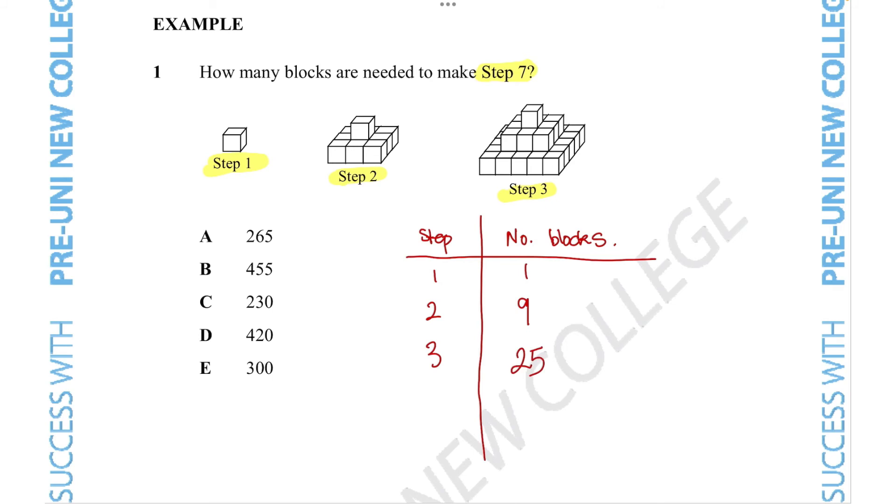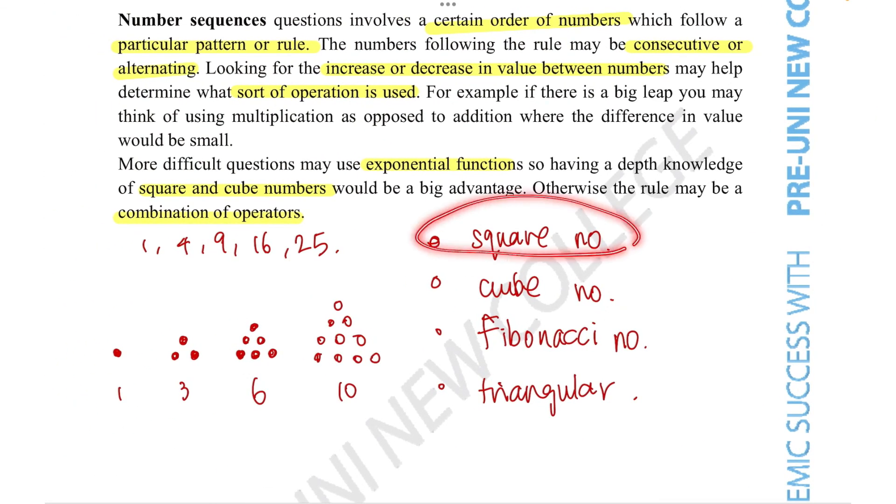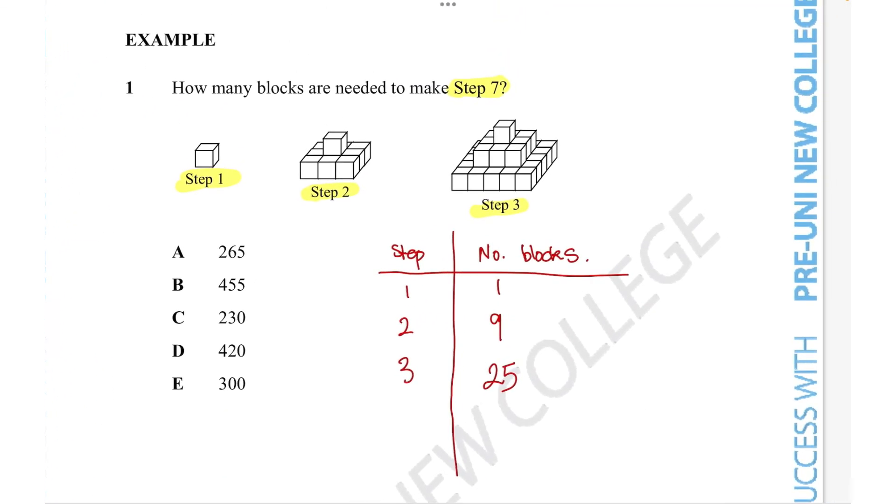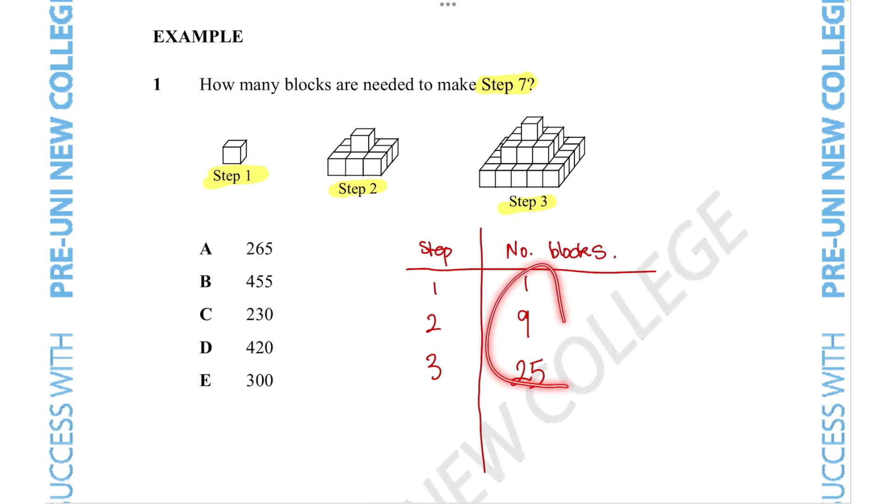Now, do you remember the tips we talked about? One was to immediately recognize that square numbers are very common in these questions. Hopefully you recognize that these are in fact square numbers. And it looks like there's a pattern within the pattern: 1 is 1 squared, 9 is 3 squared, and 25 is 5 squared. So the numbers are going up every odd number.